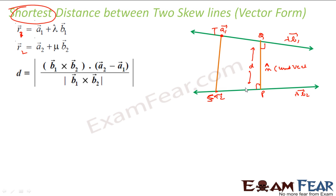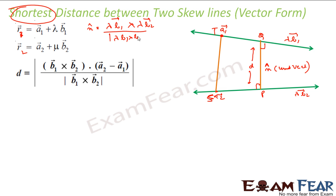So, PQ vector is D times N-cap. The unit vector N-cap is the cross product of the two direction vectors divided by their magnitude. N-cap = λB1 × μB2 / |λB1 × μB2|. Since λ and μ cancel out, we get N-cap = B1 × B2 / |B1 × B2|. This is the unit vector.